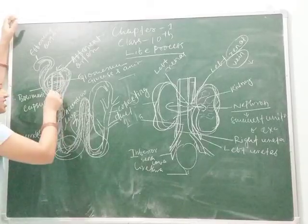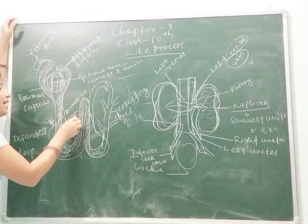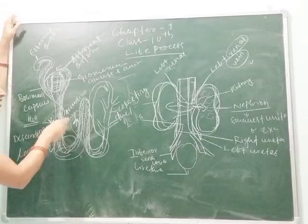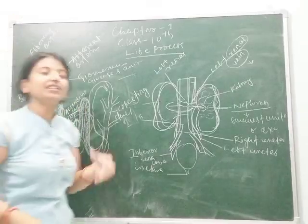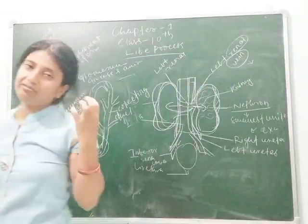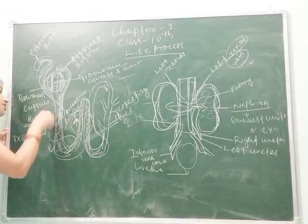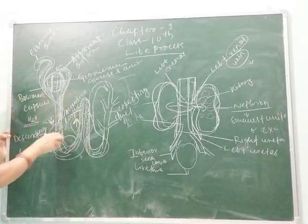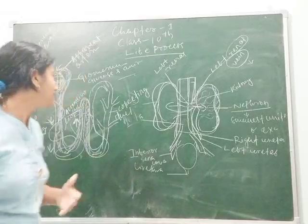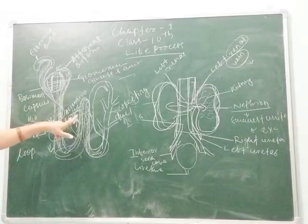After filtration, the remaining water and substances move through the efferent artery. The descending lobe is permeable to water — it absorbs water from the unfiltered substance — while the ascending lobe absorbs salt. This is why urine tastes salty: urine releases not only urea but also excess salt and water. These coiled tubules increase surface area, allowing rapid absorption of water and salt.